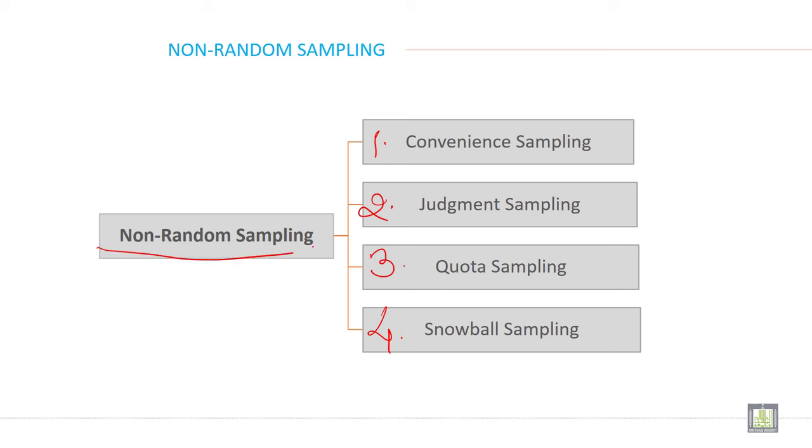Remember, non-probability or non-random samples have four types: convenience, judgment, quota, and snowball. Let's understand them one by one.